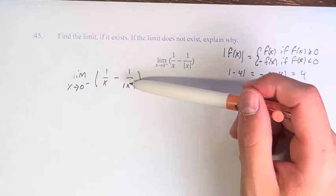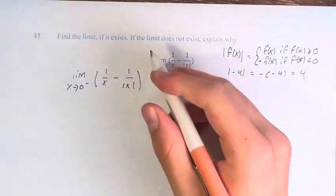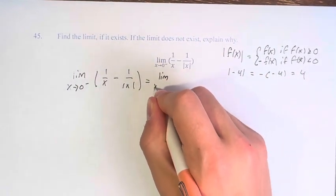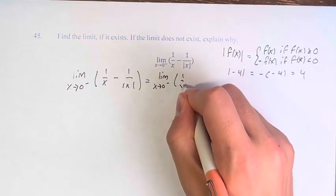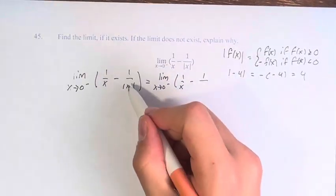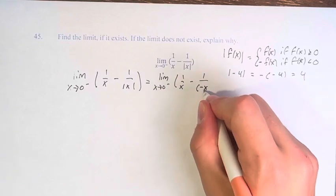Therefore, these are values that are less than 0. Therefore, the absolute value of those things are not going to be x, but negative x.